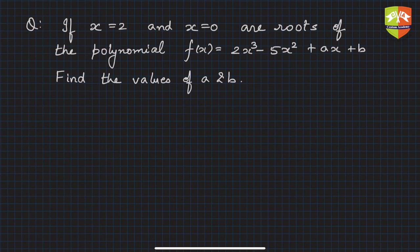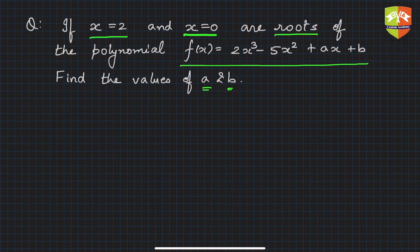Hello friends, welcome again to another session on problems related to zeros of polynomials. The given question says that if x equals 2 and x equals 0 are roots or zeros of the polynomial f(x) equals 2x³ - 5x² + ax + b, find the values of a and b.